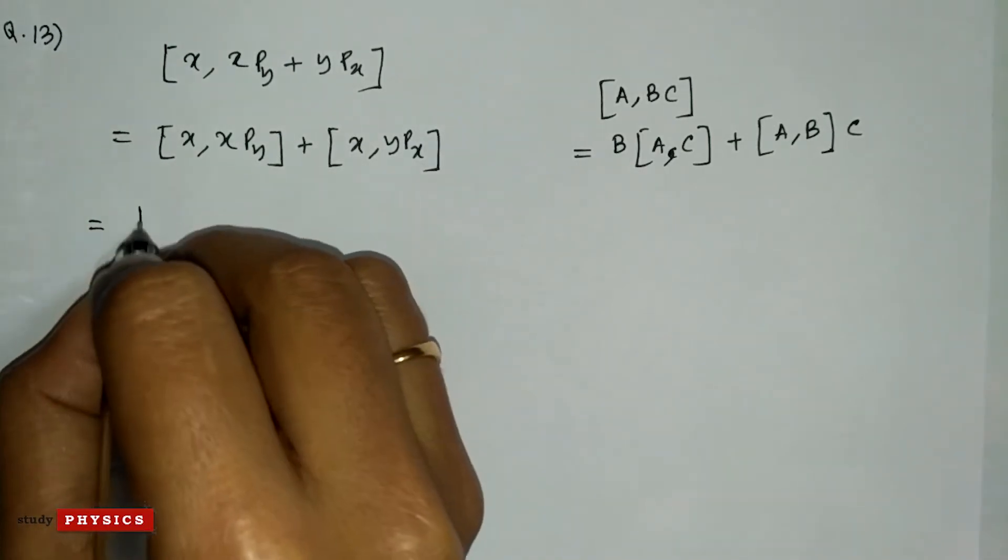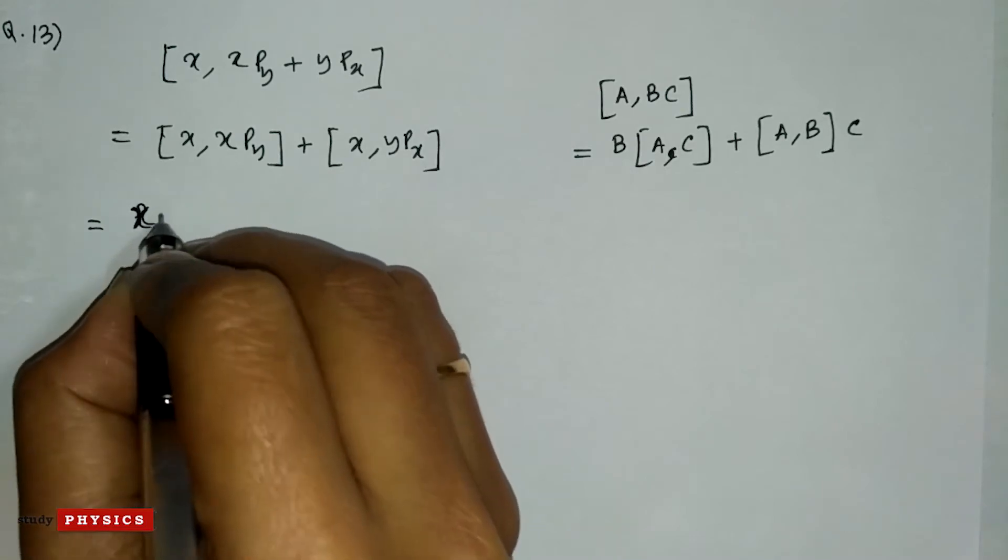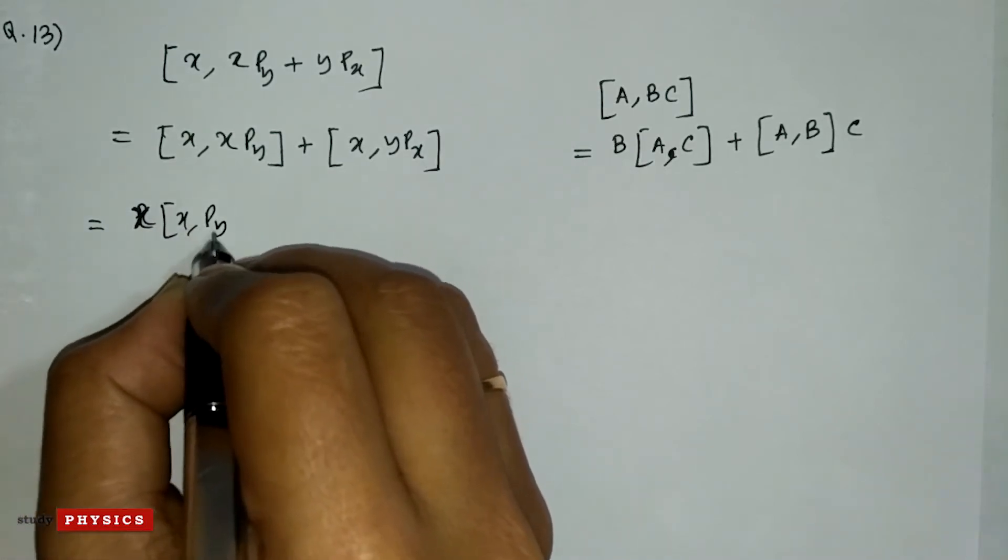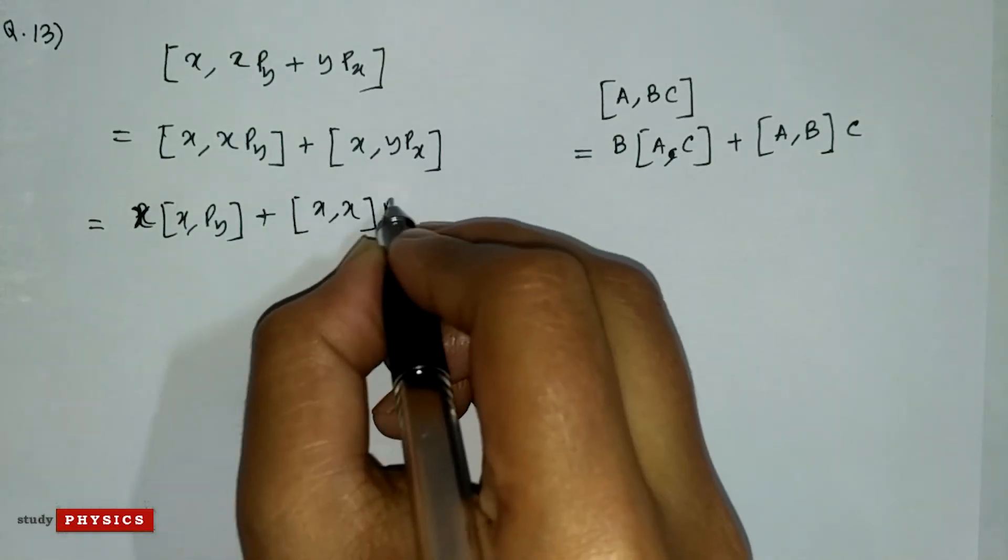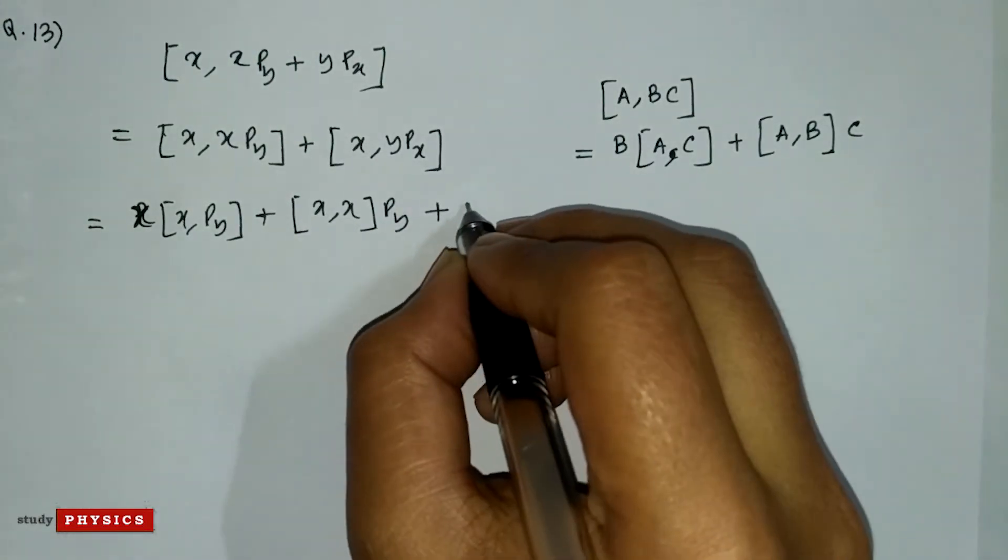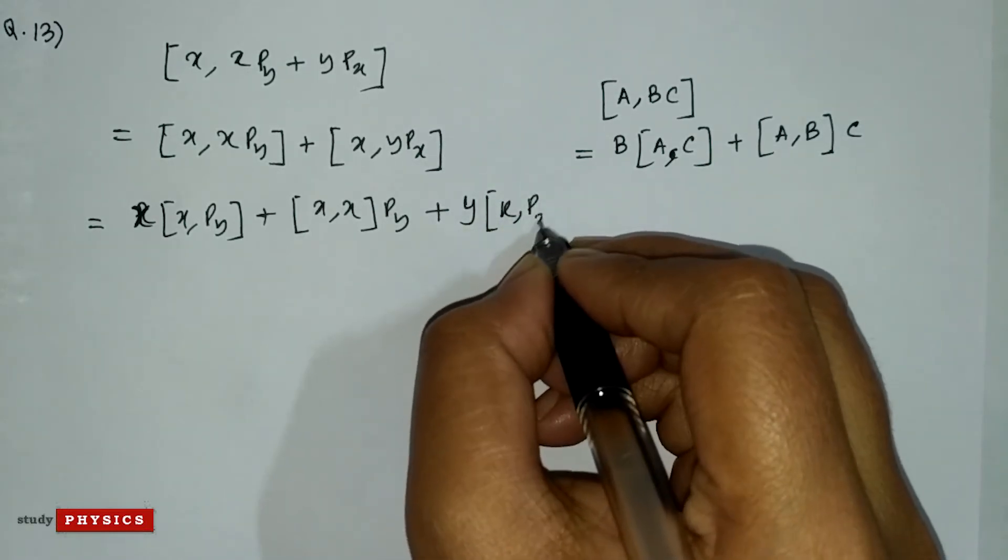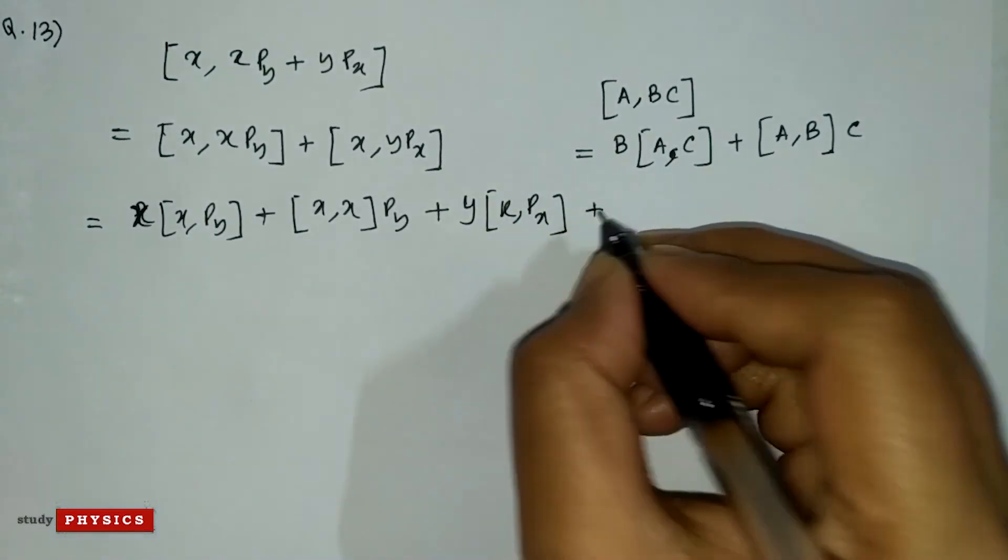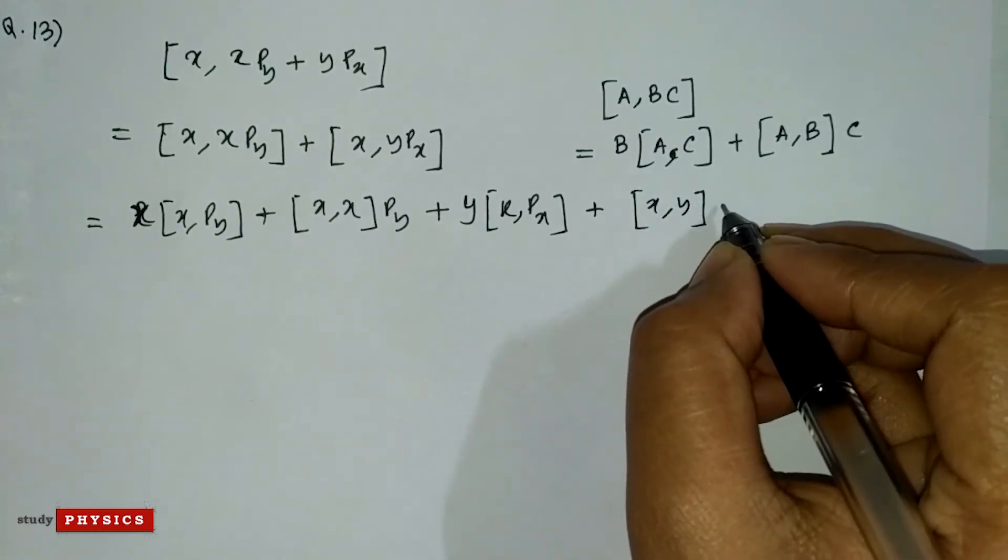We can write this as x[x, p_y] + [x, x]p_y + y[x, p_x] + [x, y]p_x.